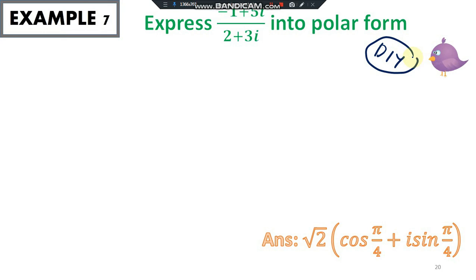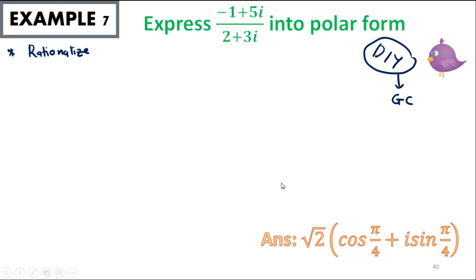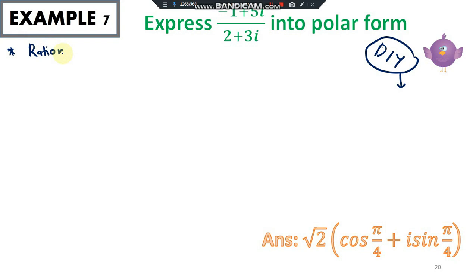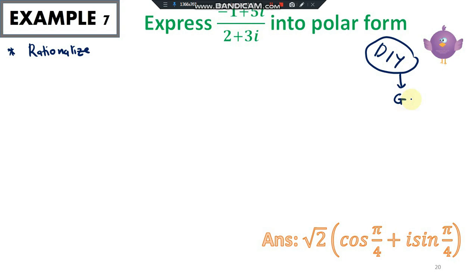The next one I'll leave as a DIY. The expression is (-1 + 5i) divided by something — remember you may need to rationalize it into a single complex number first, because you shouldn't have (2 + 3i) as a denominator. Do it by yourself and submit to your respective lecturer via Google Classroom. Good luck!